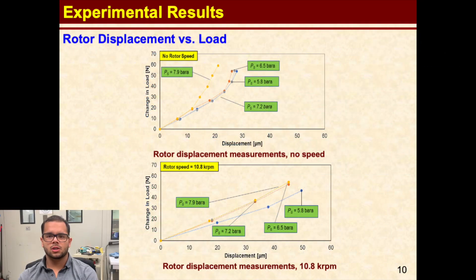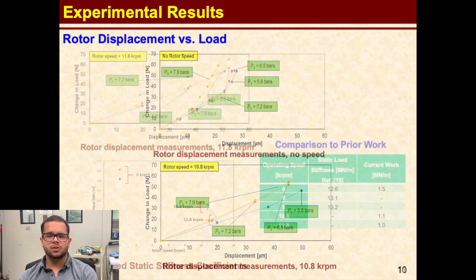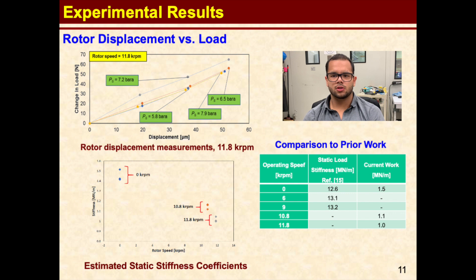The following charts depict the rotor displacement versus static load as obtained by applying the Euclidean norm to the displacement measurements from the orthogonally positioned eddy current sensors. The maximum static loads could only apply a specific load of 10.3 kilopascal for all rotor speeds due to concerns about the integrity of the rotor bearing system. The results for the highest supply pressure and no rotor speed show a lower displacement compared to those curves obtained with a lower supply pressure. In the case of measurements with a rotor speed of 10.8 kRPM, the measurements show a linear trend and depict a larger displacement compared to the test with no rotor speed. The supply pressure of 5.8 bar shows a different trend compared to the measurements with other supply pressures. Furthermore, the measurements with the largest rotor speed show a larger displacement compared to the same range of loads applied at lower rotor speeds.